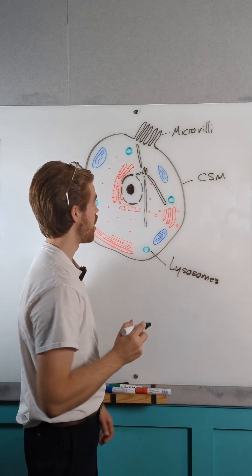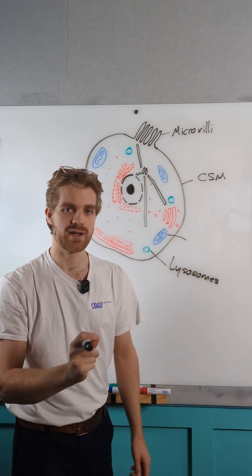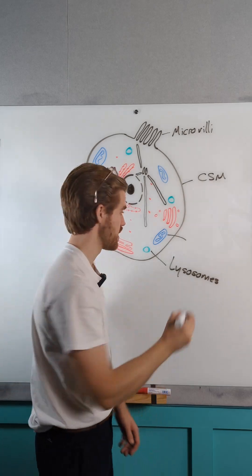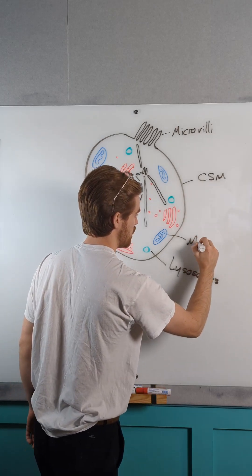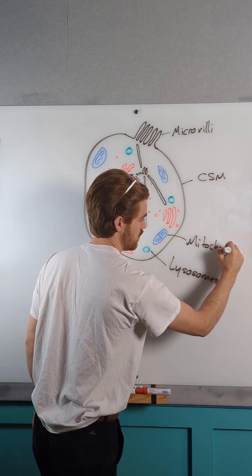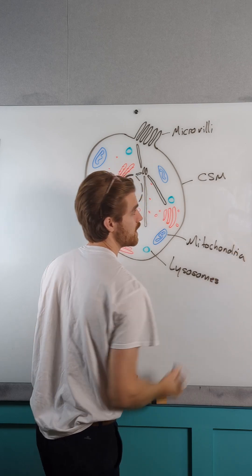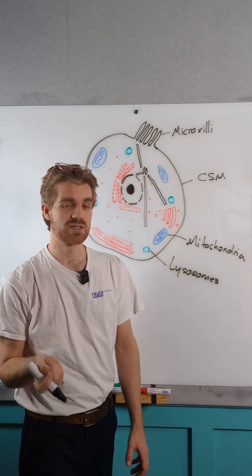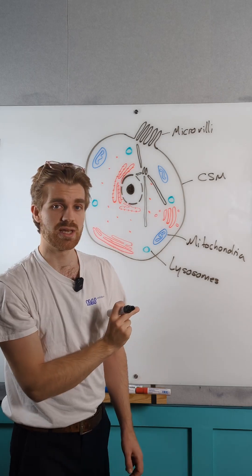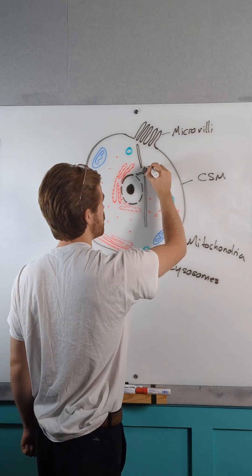Then we might have our mitochondria here. I can recognise that because they have that double membrane. As well as our mitochondria, we can start to recognise some structures in the cytoplasm here.